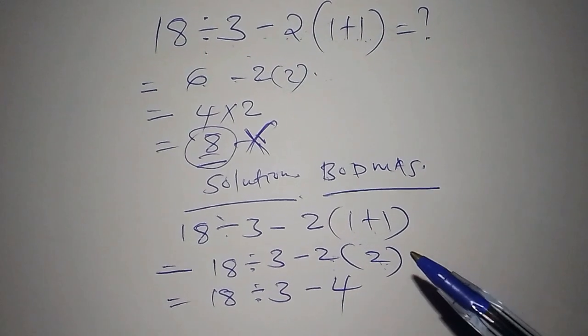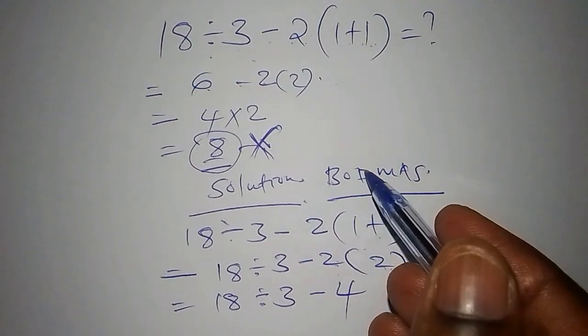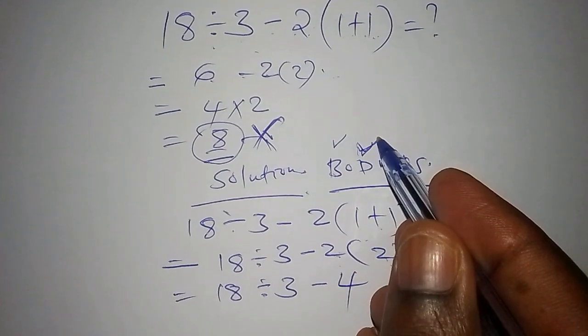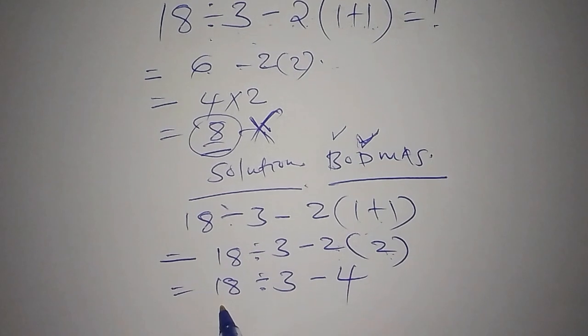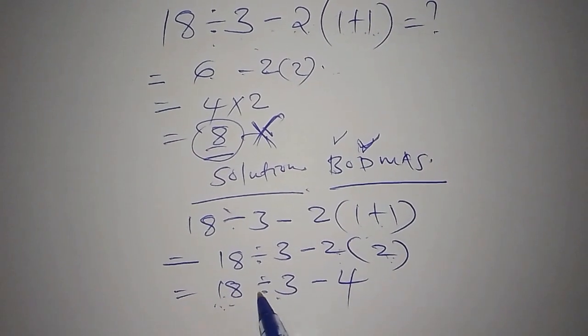So what we are going to do next, we are going to move to the division. We are done working out the bracket, so we shall move straight to the division sign. And our division is 18 divided by 3. And what is 18 divided by 3? It is 6.